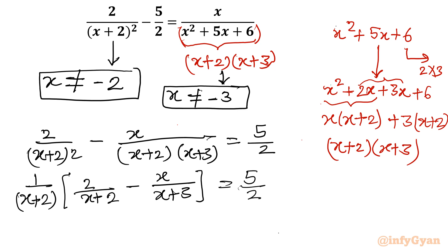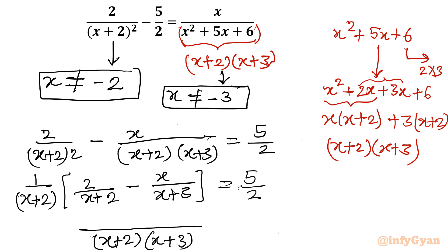Now I will take LCM. Once I take LCM, I write (x+2)(x+3) in the denominator, and in the numerator I write 2 times (x+3) minus x times (x+2), equal to 5 over 2.